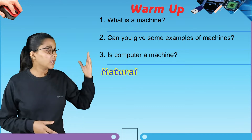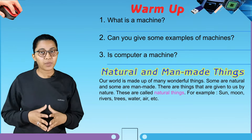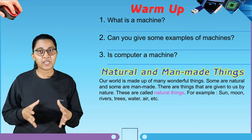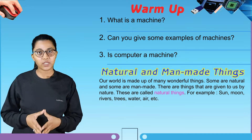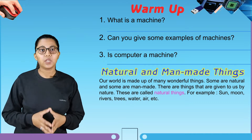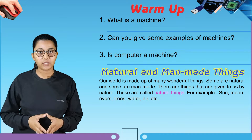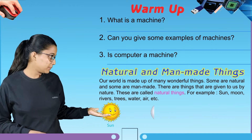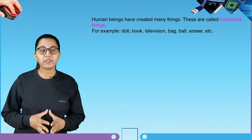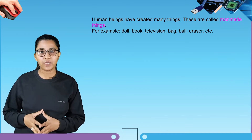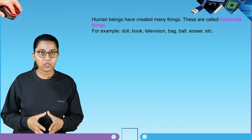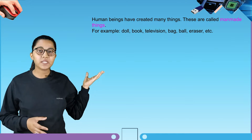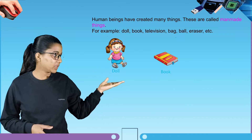Our first topic is natural and man-made things. Our world is made up of many wonderful things — some are natural and some are man-made. Things given to us by nature are called natural things, for example: sun, moon, rivers, trees, water, air, etc. Human beings have created many things called man-made things, for example: doll, book, television, bag, ball, eraser, etc.